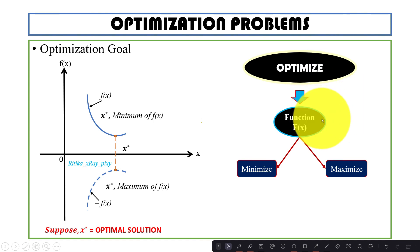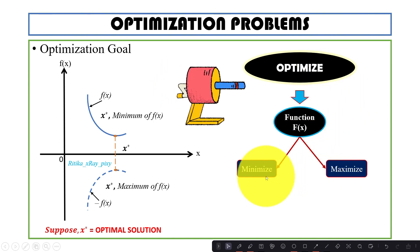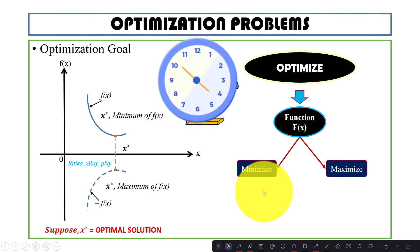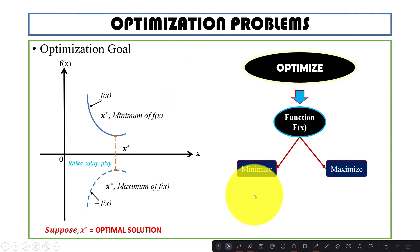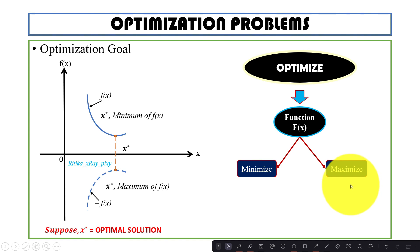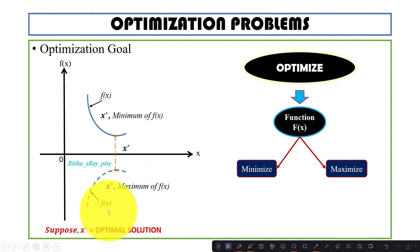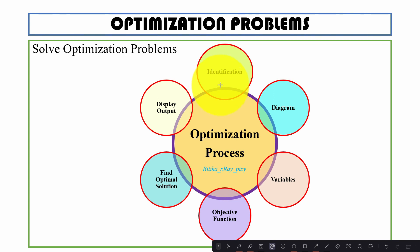In optimization, we try to find out the maximum or minimum value for the objective function. For minimization problems, we can minimize the time for any task or minimize the cost for any industrial project. For maximization problems, we can maximize the power generated by any device. The optimal solution is denoted as x-star. For minimization problems we use f(x), and for maximization problems we use minus f(x).